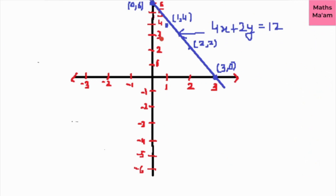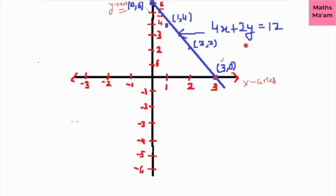Now we show how to represent this equation on the x-axis and y-axis. We plot the points: (3, 0) where x is 3 and y is 0, and (0, 6) where x is 0 and y is 6, along with other values. When we plot all these points on the coordinate plane, we get a line — this is the graph representing the equation 4x plus 2y equals 12.